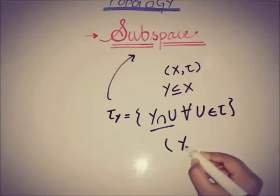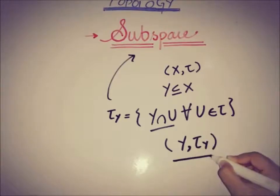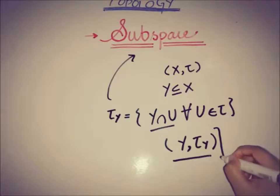We can write y, tau y and this is known as a subspace topology on y. This whole thing is known as a subspace topological space or in short topological subspace.